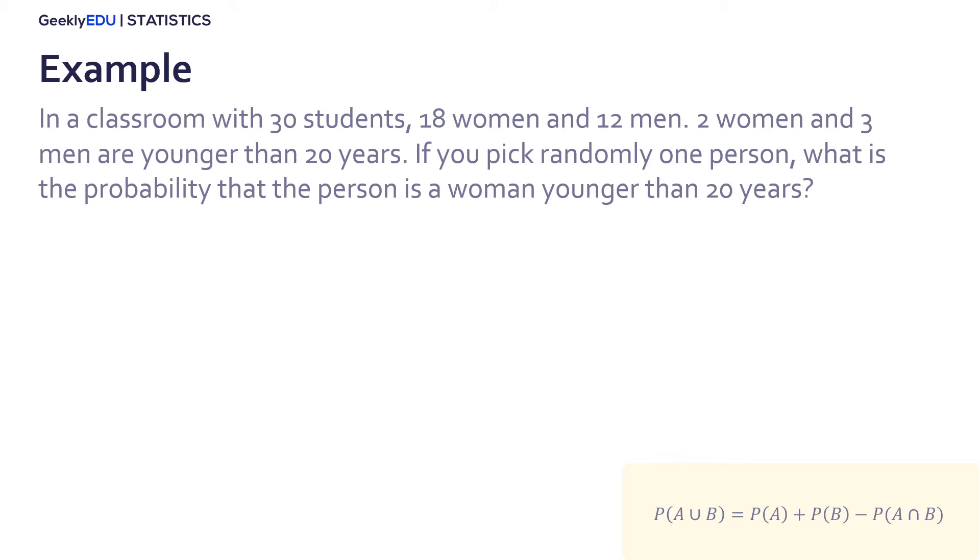We need to analyze the information given and consider what is the information we need. In a group of 30, 18 are women. So, the probability of being a woman is 18 in 30, equal to 0.6.